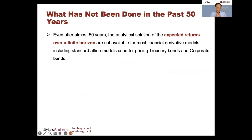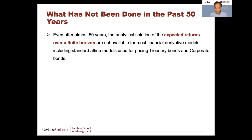So what has not been done in the past 50 years? Sometimes because so much has been done and the risk-neutral measure did so much, we forget to ask what is missing. Even after almost 50 years, the analytical closed-form solutions for expected return on any contingent claim — not just an option but treasury bonds, corporate bonds, anything whose value is contingent on another asset — the expected return over a finite horizon on that contingent claim had not been answered with the rigor required to derive all kinds of closed-form solutions.